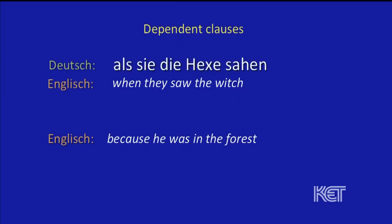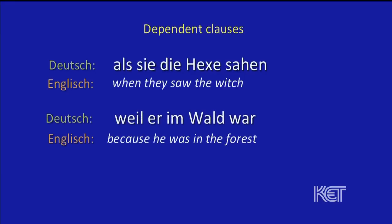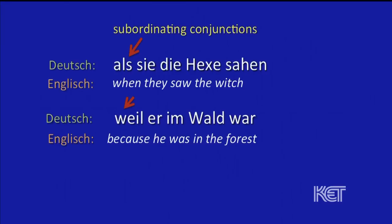So let's look at the German for each of these. For that first one: 'Als sie die Hexe sahen.' And the second one, the German for that would be: 'Weil er im Wald war.' And just like in English, those German dependent clauses can't stand by themselves — they can't exist independently. Both of those clauses have something at the beginning — and you can see they are...?